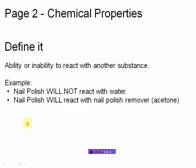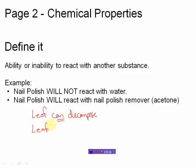Now, a chemical property is really defined as the ability or inability of a substance to react with another substance. I'm trying to describe matter, but trying to describe it chemically. We're not going to use your five senses, and we're not going to use measurements. It's going to say something can react or cannot react. For example, nail polish will not react with water, but nail polish will react with nail polish remover — we have a little chemical reaction going on. A chemical property could be that a leaf can decompose. I did not say it is decomposing — I said it can decompose, it has the ability to decompose. A leaf will not rust.